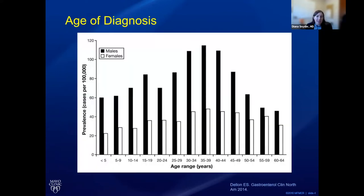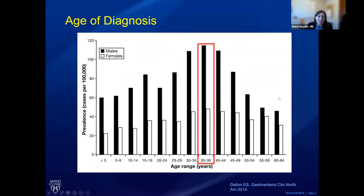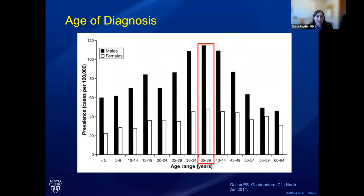Regarding age of diagnosis — there's quite a span, but the most common time frame is typically in the late 30s. However, patients who are children will present to pediatric physicians as young as under five, and we have a decent amount of patients who come to us in their 60s. Although we tend to diagnose this condition in the 30s, a lot of patients will tell us they've had symptoms for many years. Patients get very good at compensating — eating slower, being the last to leave the table, chewing carefully, eliminating certain foods — so it sometimes takes a while to diagnose.